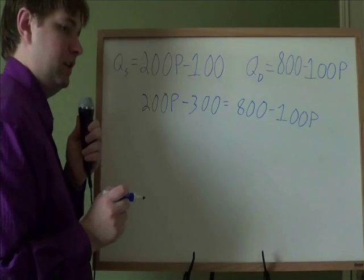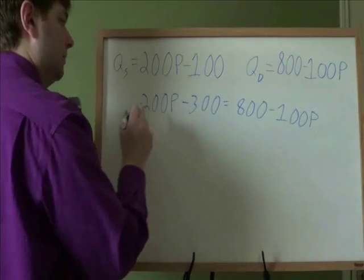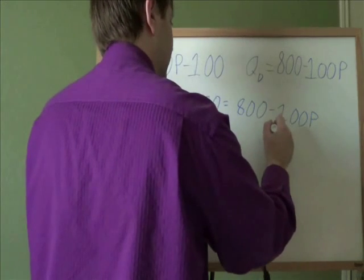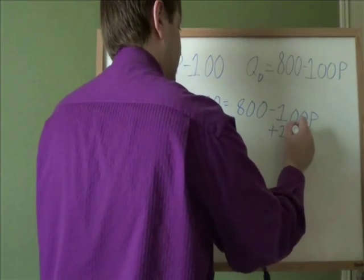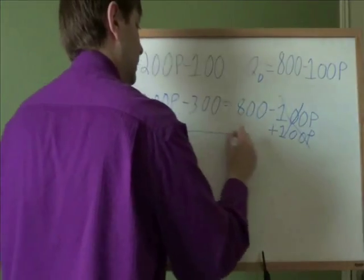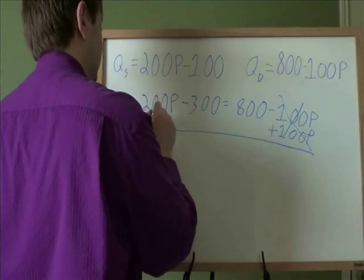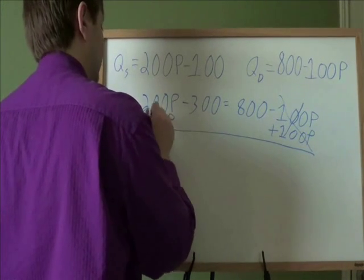And solving this will be very similar to that last problem we solved this way. We need to start getting all the P's on the same side. So I'm going to say plus 100P, because that will cancel those out. And whatever we do on the right side, we have to do on the left side. Plus 100P there.